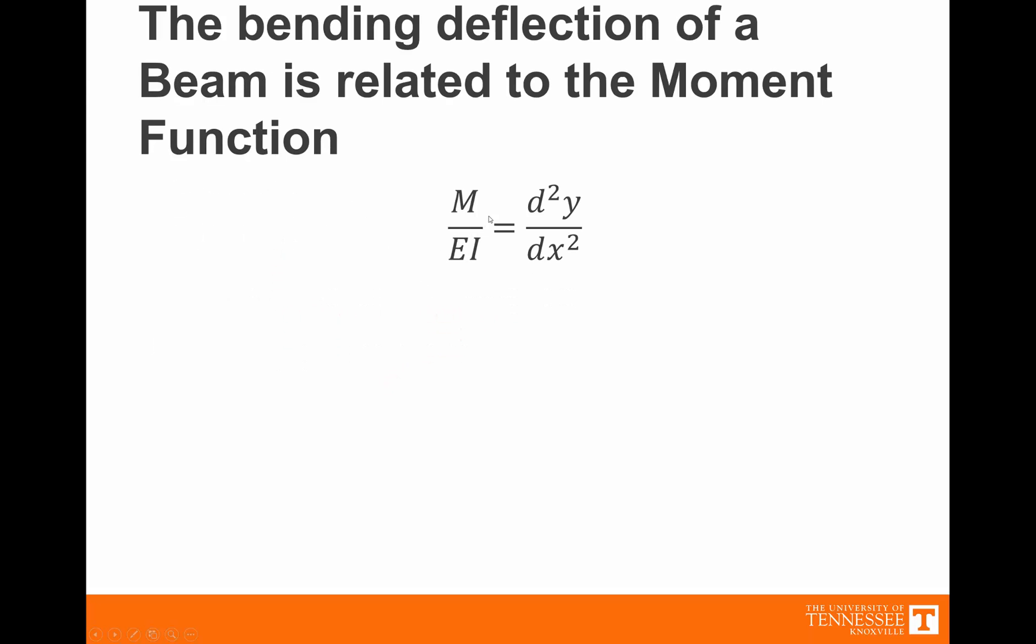The moment function tells us that the moment of a beam, which is a function of x on the beam, divided by the modulus of elasticity and the inertia, is equal to the second derivative of the deflection of the beam in that location.